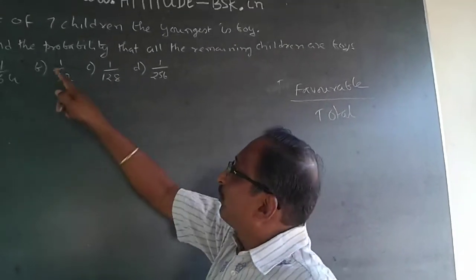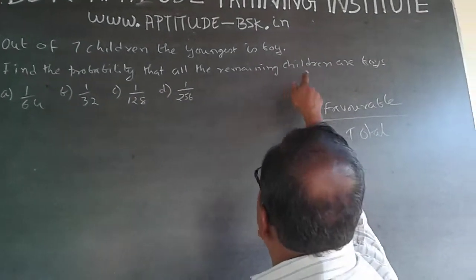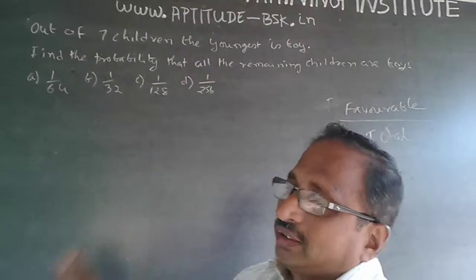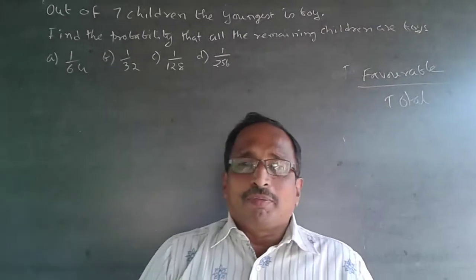And now, what I say is, find the probability that all remaining children are boys. See, whenever I talk about children, it can only be boys or girls.